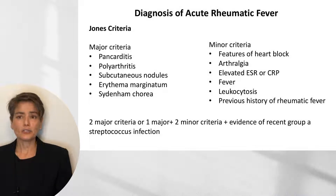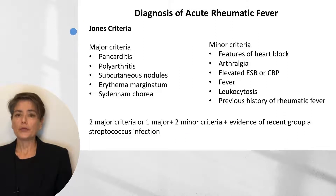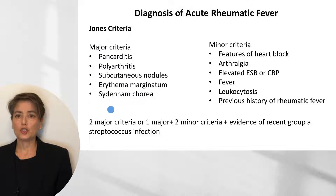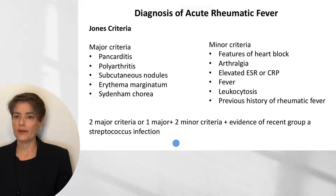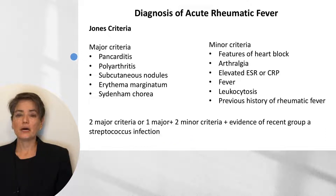How is a diagnosis of acute rheumatic fever made? We use the Jones criteria, where you need to have either two major criteria, or one major and two minor criteria, plus evidence of a recent group A streptococcus infection. What we primarily see in children is pancarditis; adults more commonly present with polyarthritis.